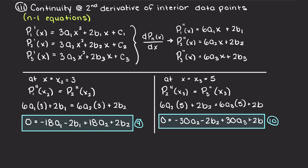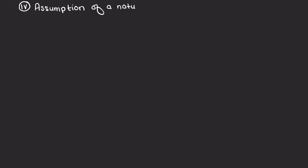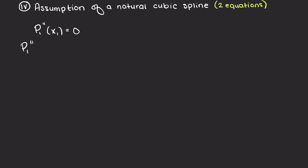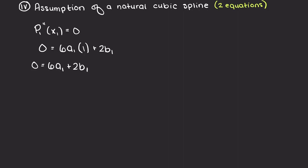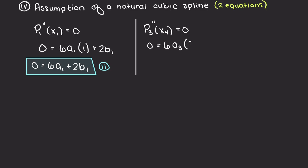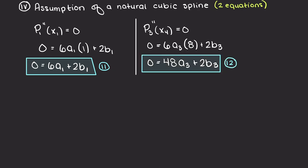We now have 10 equations and are missing 2. We were told to assume a natural cubic spline, so we assume the second derivative of our endpoints are both equal to zero, meaning at those points it is simply a straight line. We calculate the second derivative of P1 and P3 at points x1 and x4 respectively to get our remaining 2 equations, ensuring all variables are on one side and the constant — which is 0 — on the other side. Now that we have all 12 equations, we can solve for our 12 unknowns.